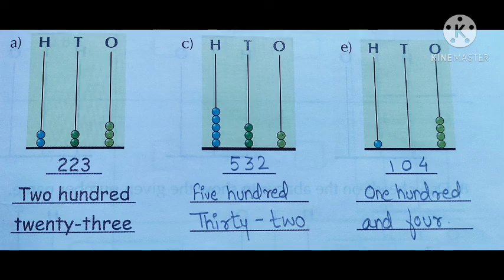Then comes the next one. In the hundreds section, there are five beads drawn — it means five hundreds. In the tens, there are three beads, that is three tens, that is thirty. And in the ones, there are two ones, that is two. So, five hundred and thirty-two.